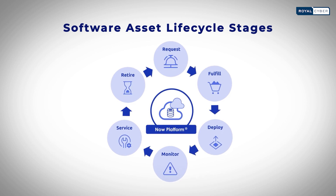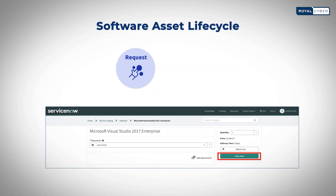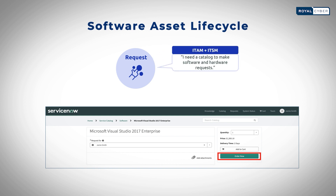Let's take a look. The request stage in the software asset lifecycle occurs before any assets are purchased or deployed. This stage can also be considered an ideation or planning phase, where stakeholders gather, discuss their objectives, and determine which assets are needed and why. The culmination of this stage is a formal request for a software asset.